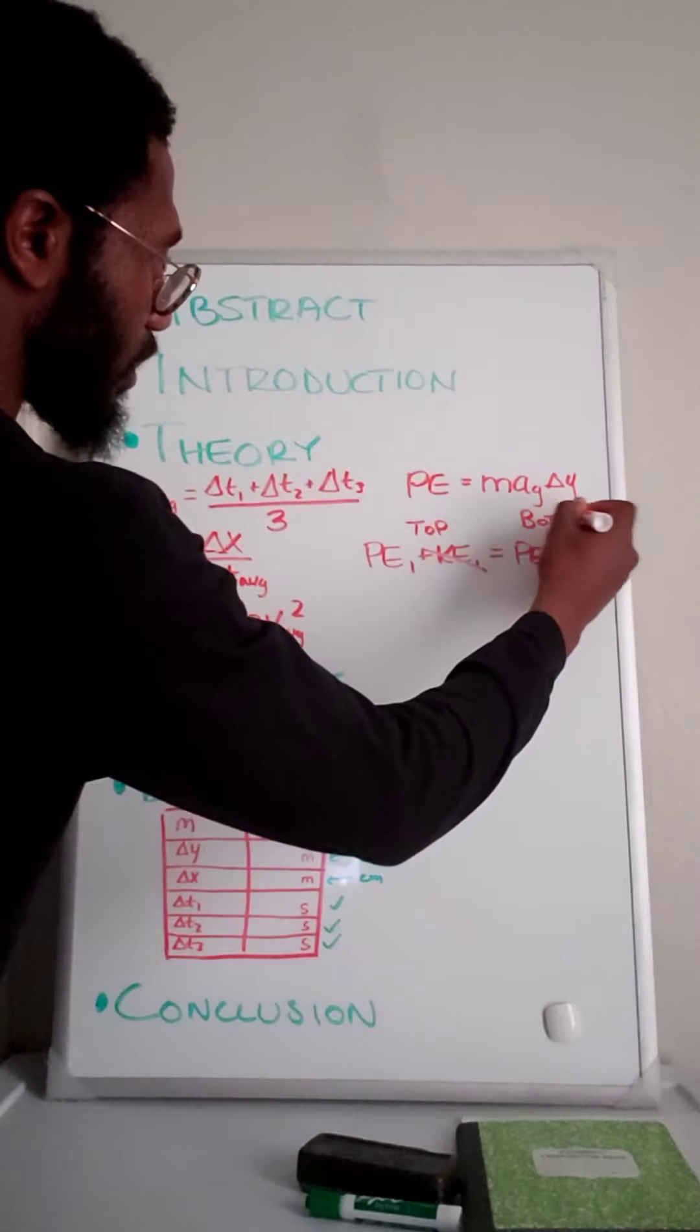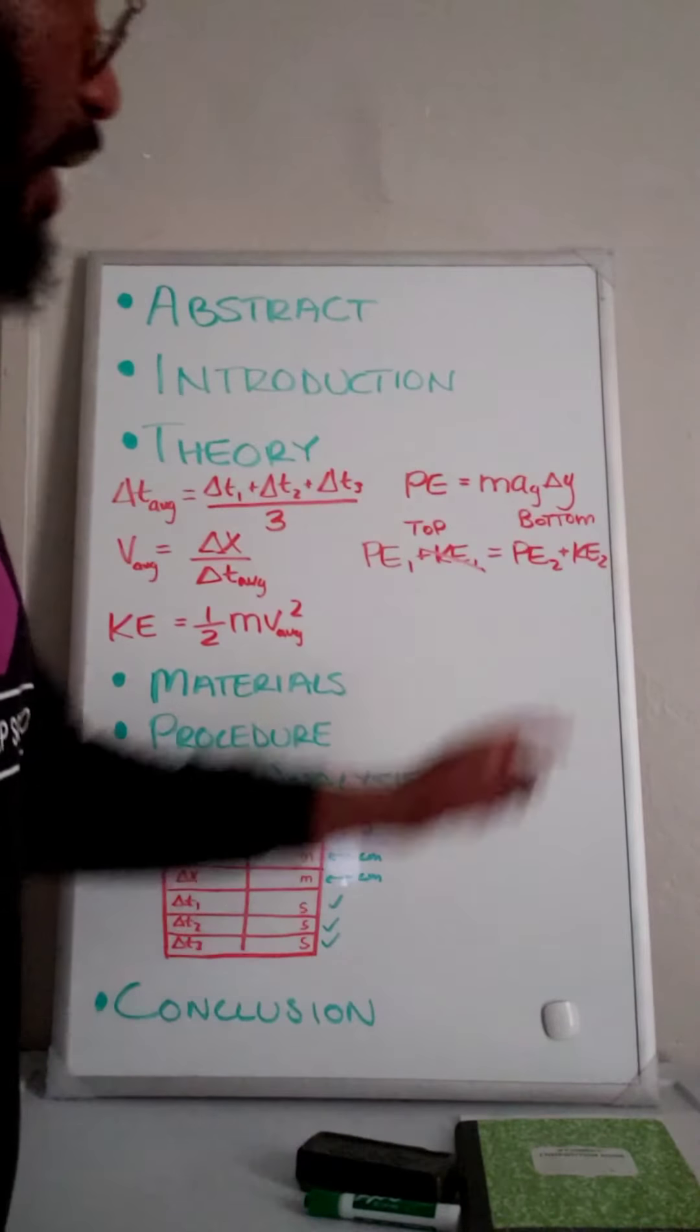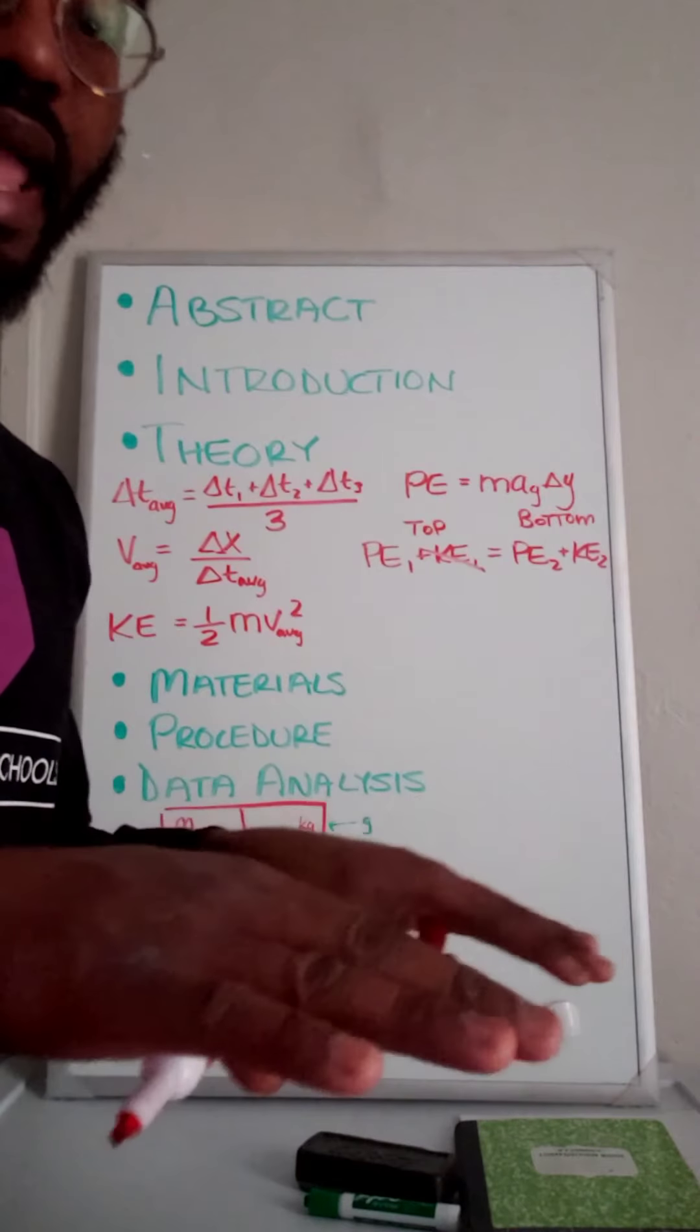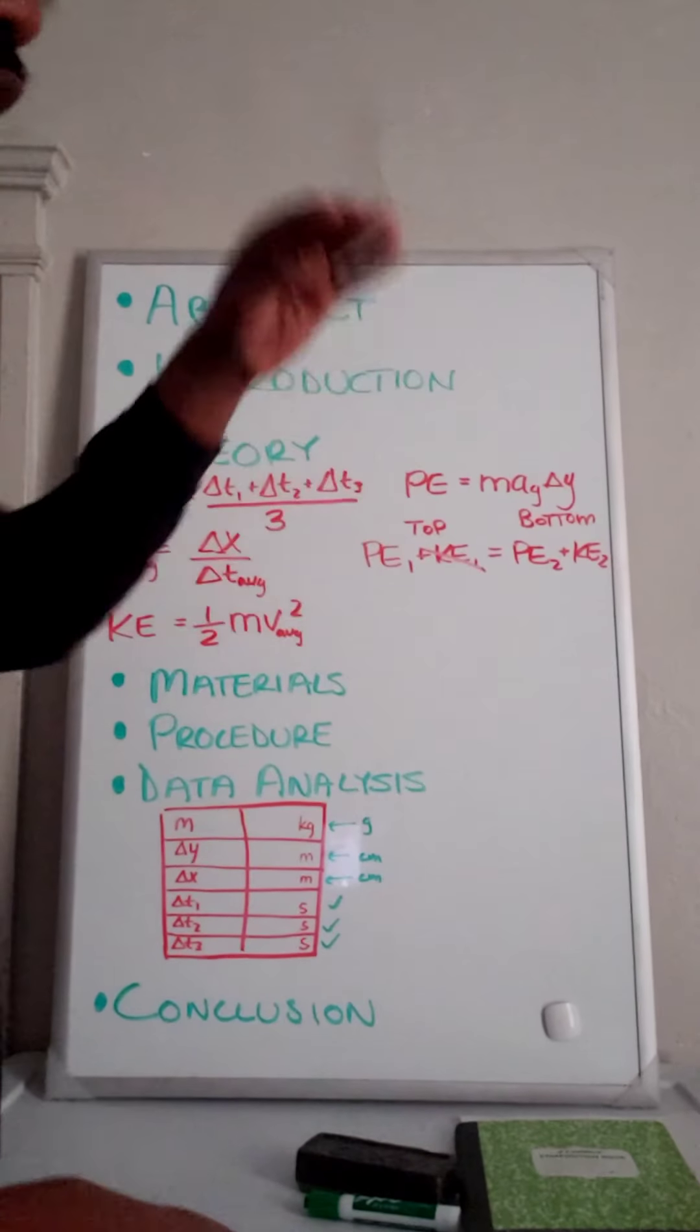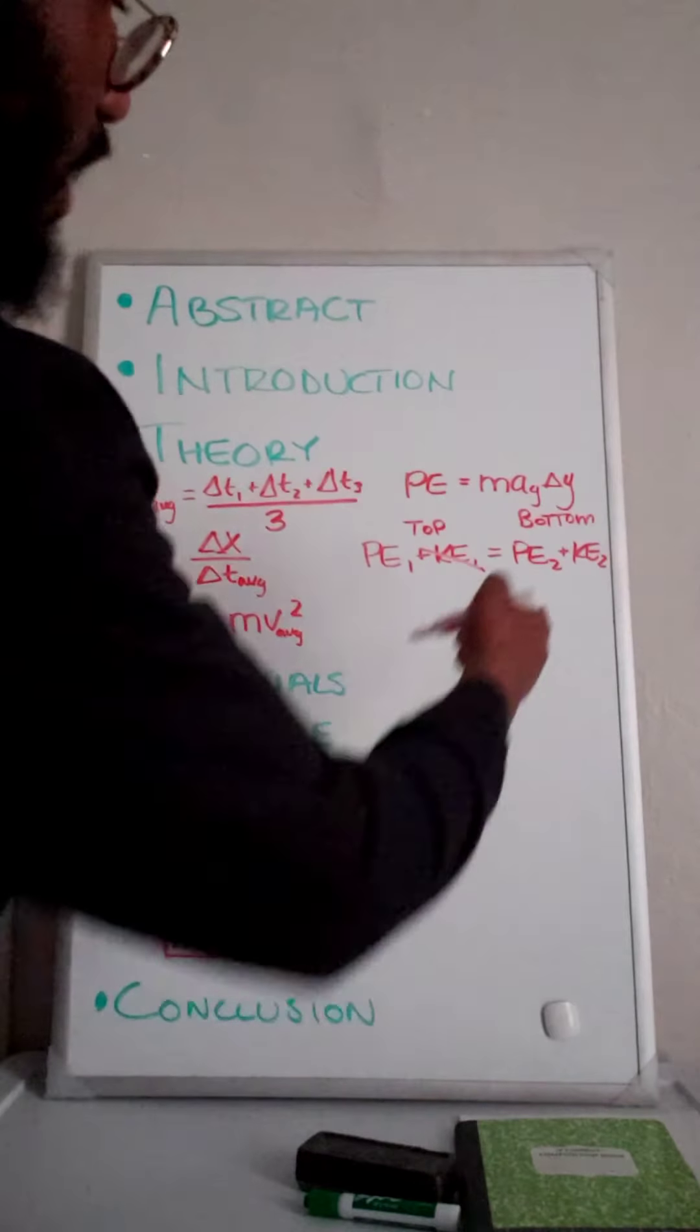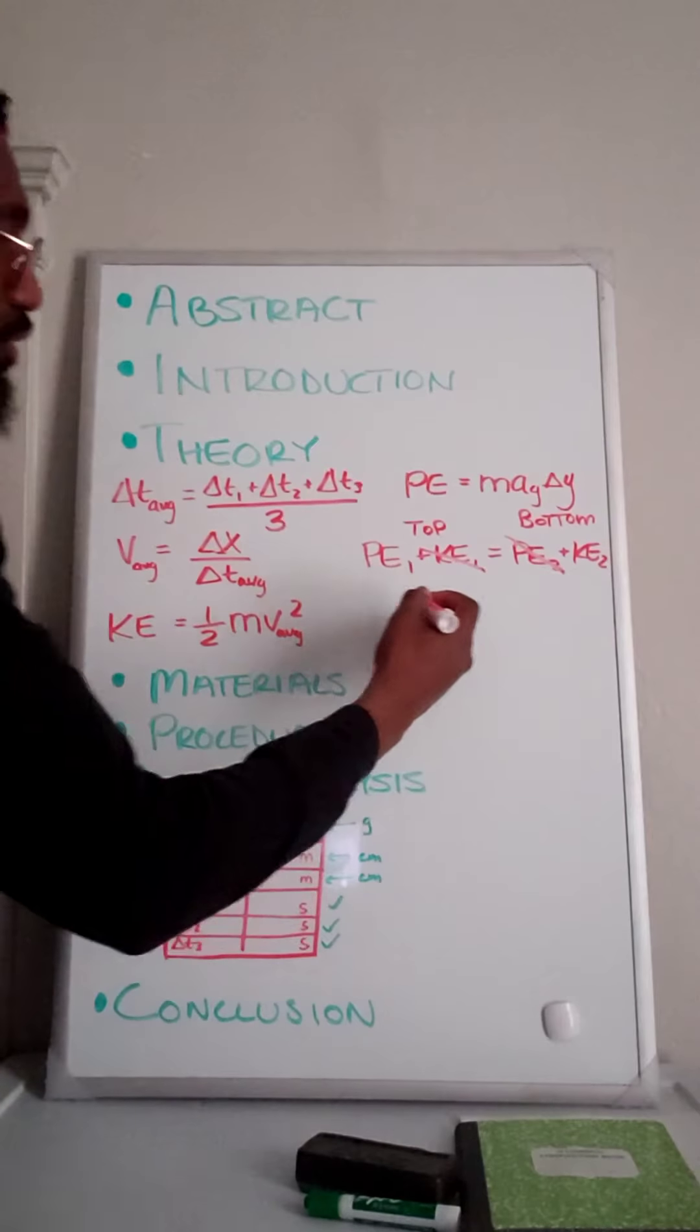At the bottom of the ramp, the car is moving so it has kinetic energy. But the car is on the ground, on the tabletop, which means it lost all of its potential energy because it reached the bottom. So that means potential energy at the bottom of the ramp is zero.